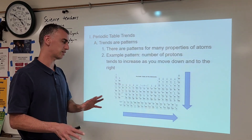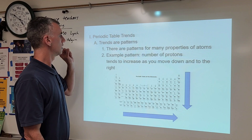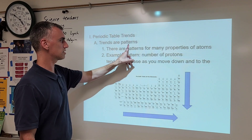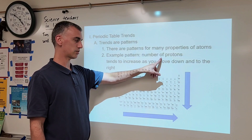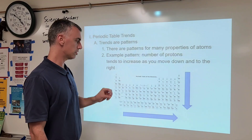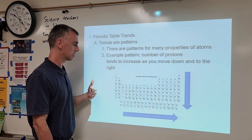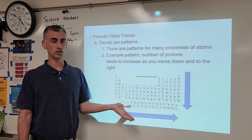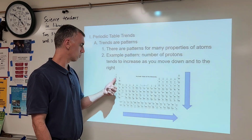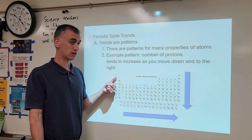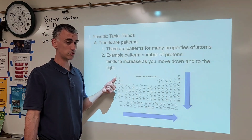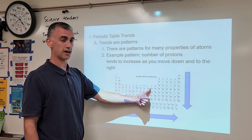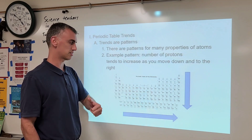Let's look at an example. What pattern can we see when it comes to the size of an atom in terms of the number of protons? You should know that the number of protons determines which element it is. For example, one proton makes it hydrogen, regardless of how many neutrons or electrons are there. Or, 29 protons is copper, regardless of how many neutrons or electrons are there.